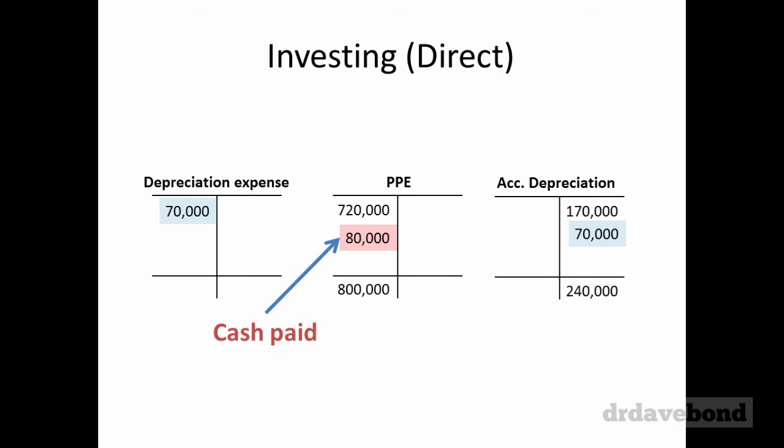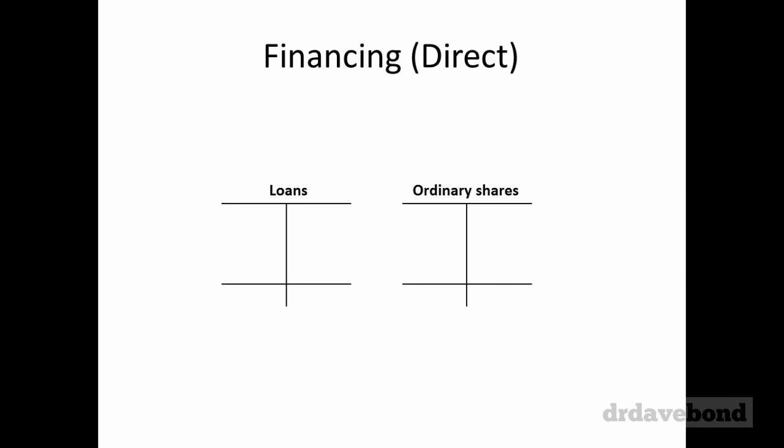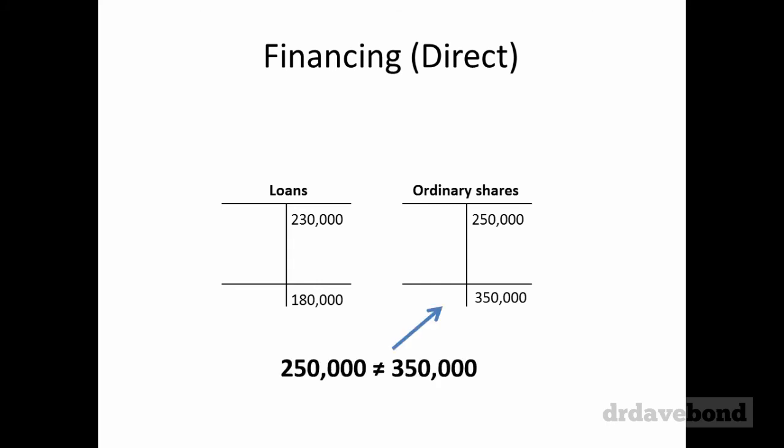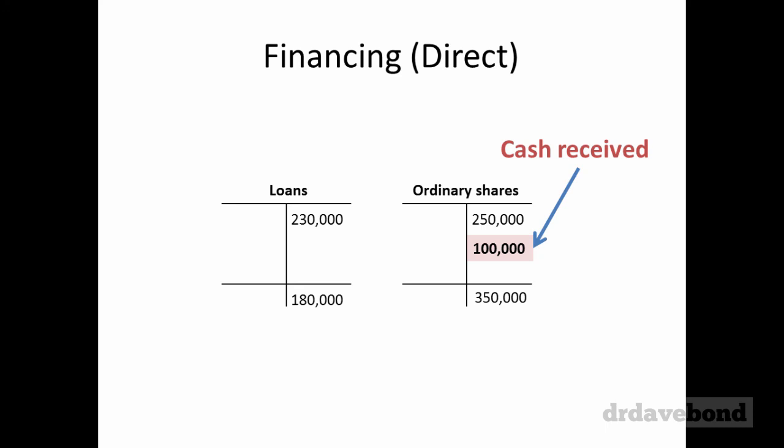That's the investing cash flows done. For financing cash flows we use exactly the same method — we look at long-term debt or non-current liabilities, as well as equity accounts (not retained earnings, but things like ordinary shares or contributed capital). We have loans and ordinary shares. Putting in starting and ending balances: ordinary shares have increased, loans have decreased. $250,000 on ordinary shares doesn't equal the ending balance — we need a $100,000 credit, so debit cash, credit ordinary shares $100,000.